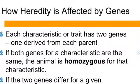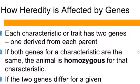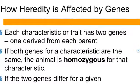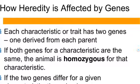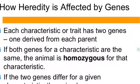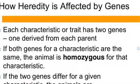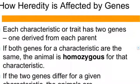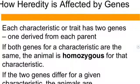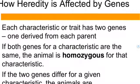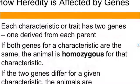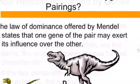Heredity is affected by genes because each characteristic or trait has two genes. One comes from each parent. If both genes for a characteristic are the same, the animal is homozygous for that characteristic — homo means same. If the two genes differ for a given characteristic, the animals are heterozygous.